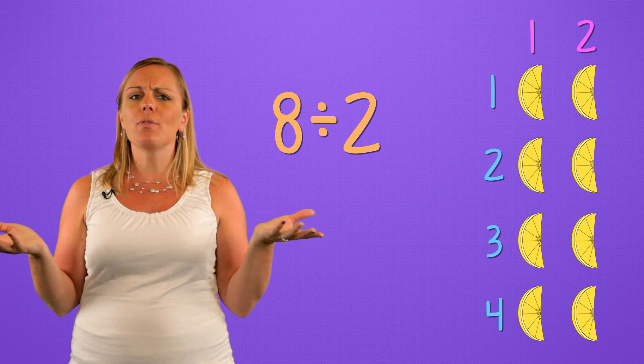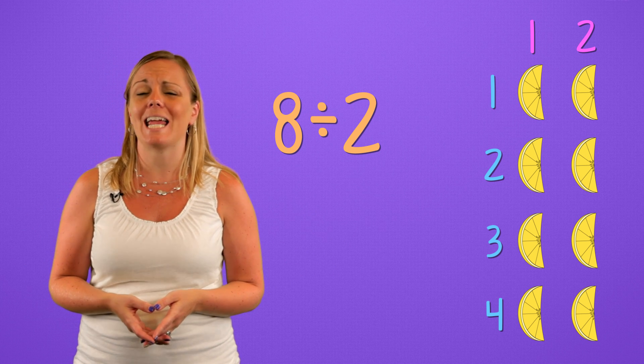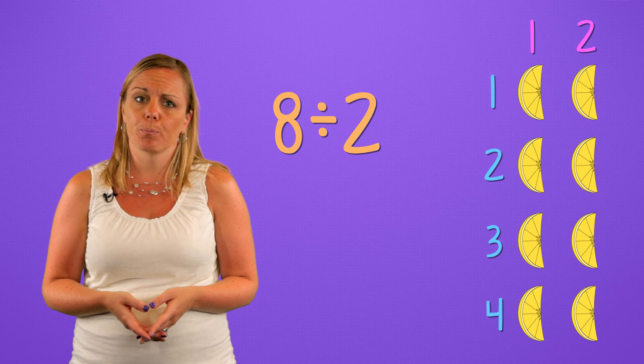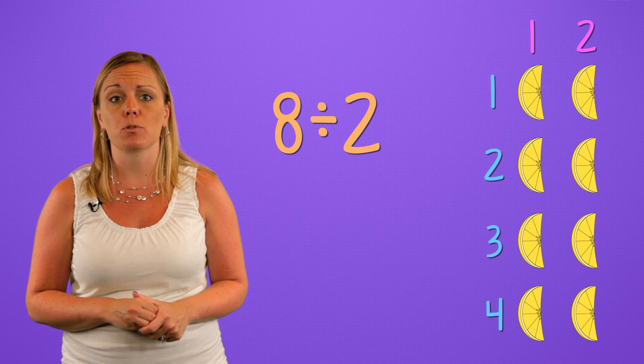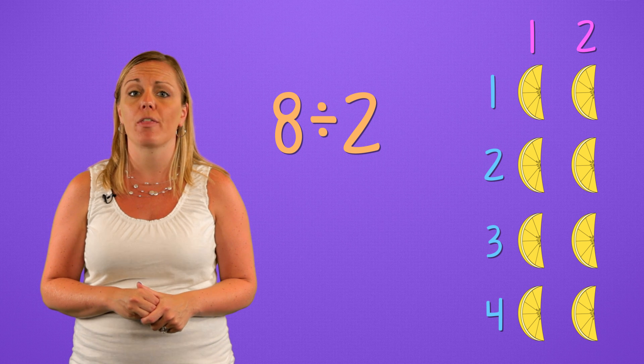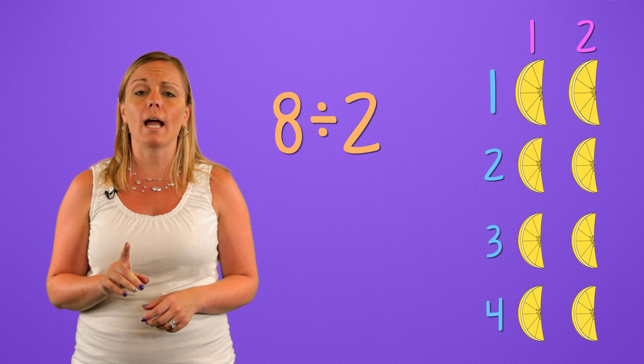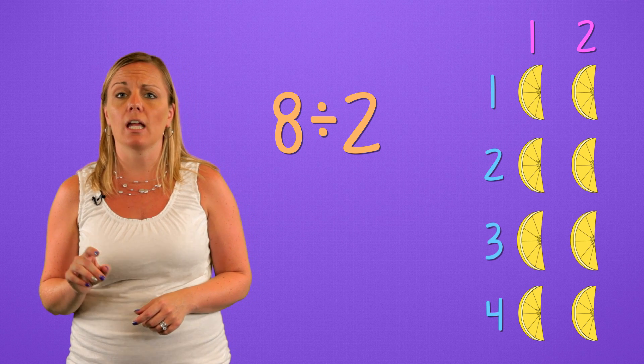So, how would this array help us find eight divided by two? Well, we can count up the number of columns to see how many groups of two there are. One, two, three, four.